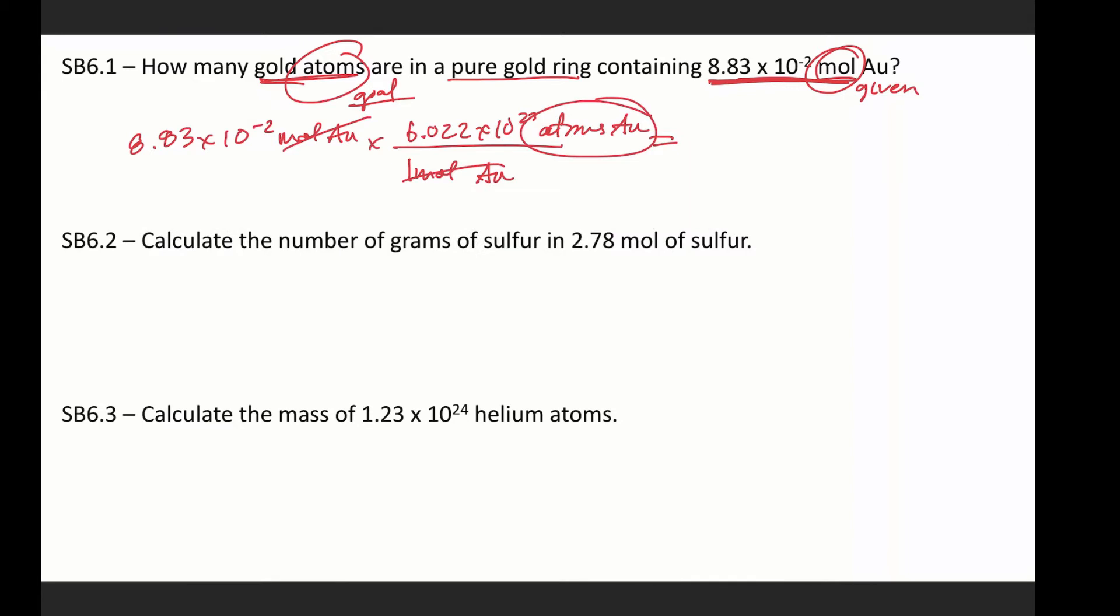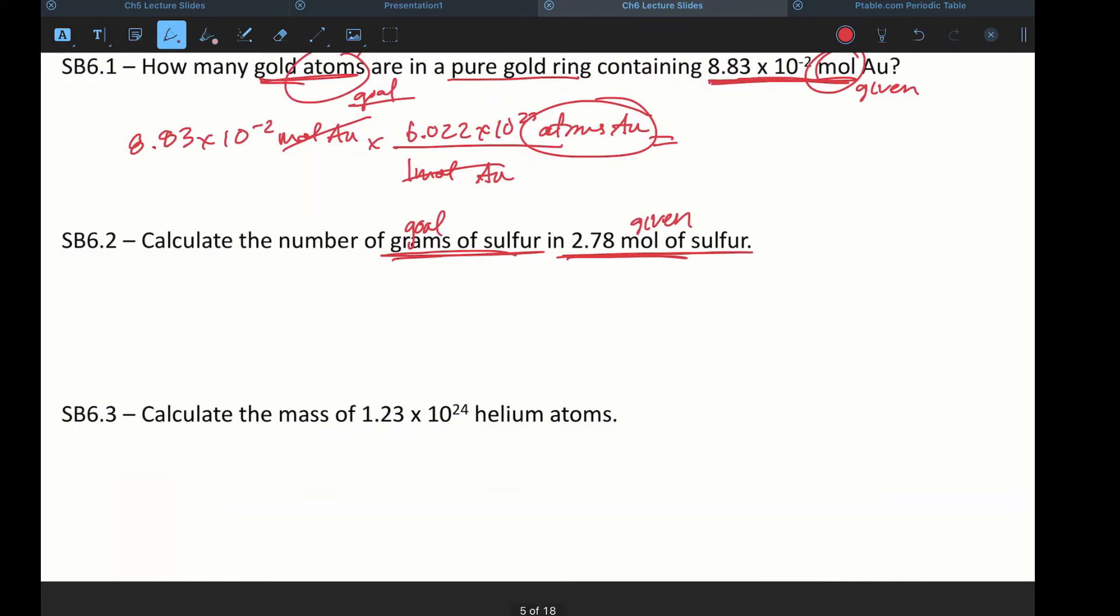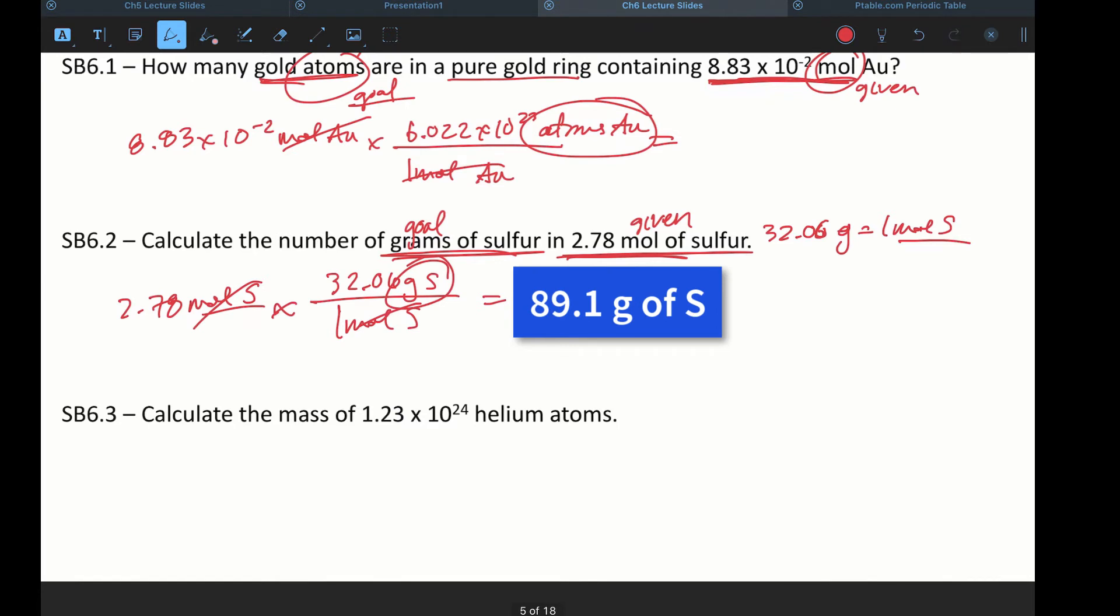All right. Next up, calculate the number of grams of sulfur in this many moles of sulfur. So my given is moles of sulfur. My goal is grams of sulfur. Do I know a relationship between moles and grams? I do. Molar mass of sulfur. Sulfur has a molar mass of 32.06. And remember, that's the number of grams equal to one mole of sulfur. So let's just set this up. 2.78 moles of sulfur. And I'll put each piece where it belongs. If this says moles, that needs to go down there. Moles of sulfur cancel. Grams of sulfur are all that remain. I would do my math and round to the correct number of sig figs, which is 3.